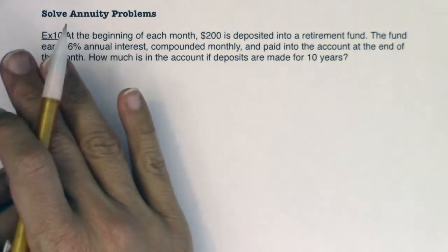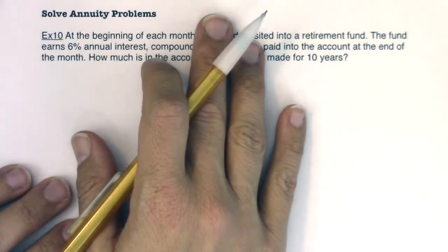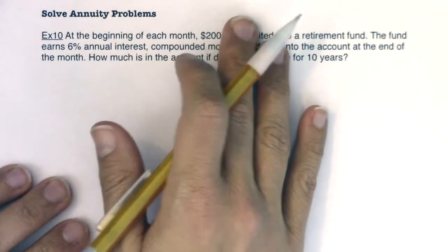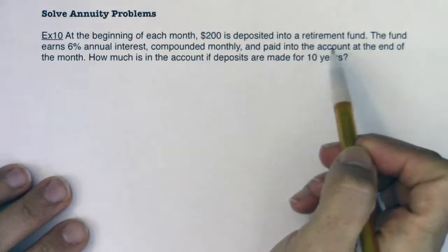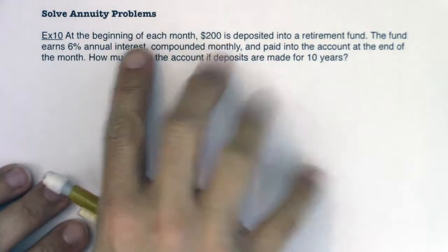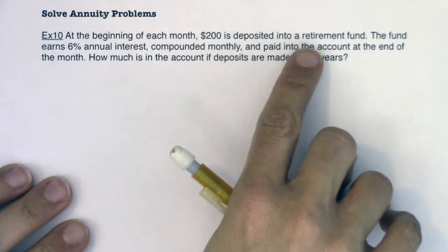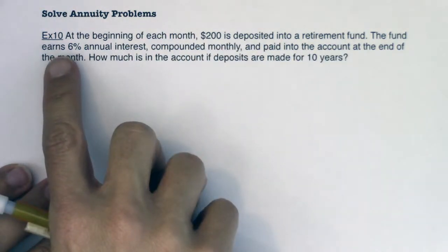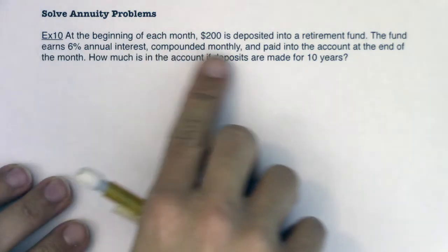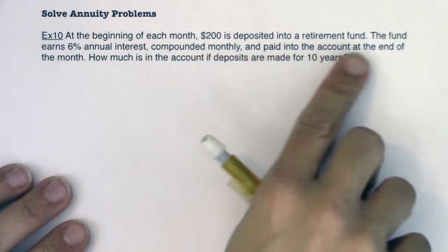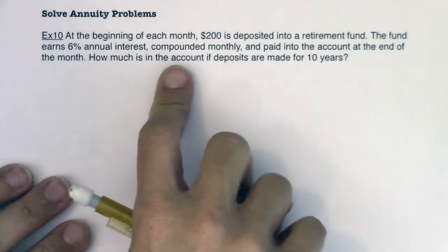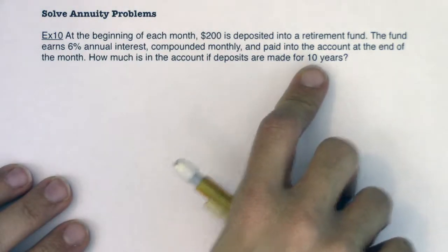When you get into a job with benefits, each month you deposit money into your retirement account so that when you retire, you can take money out at regular intervals, typically monthly. At the beginning of each month, $200 is deposited into a retirement fund. The fund earns 6% annual interest compounded monthly and paid into the account at the end of the month. How much is in the account if deposits are made for 10 years?